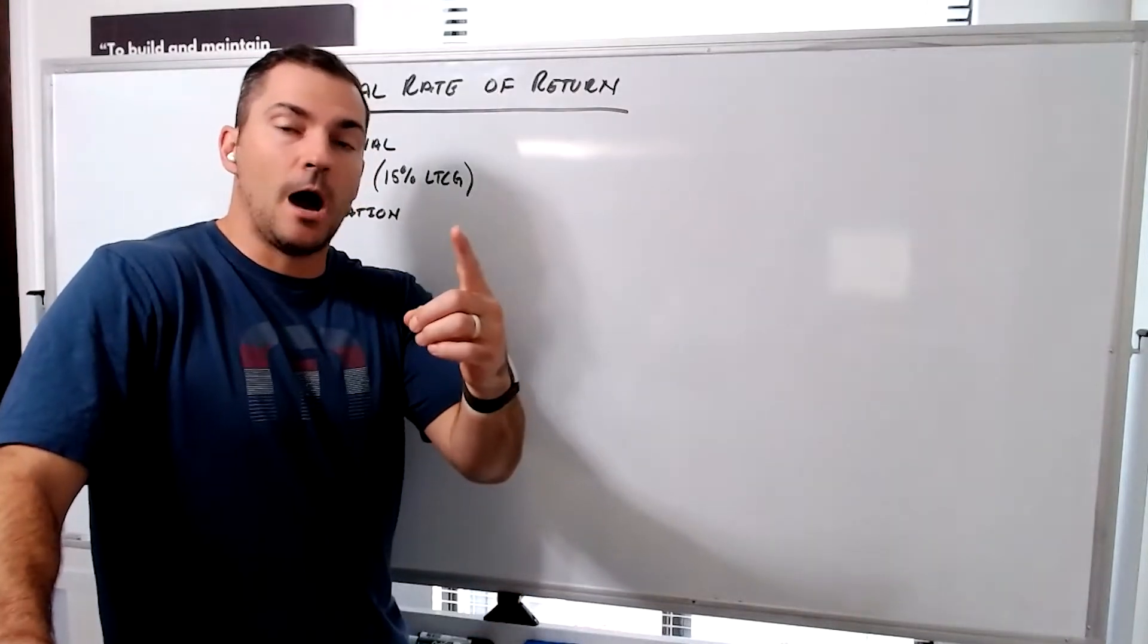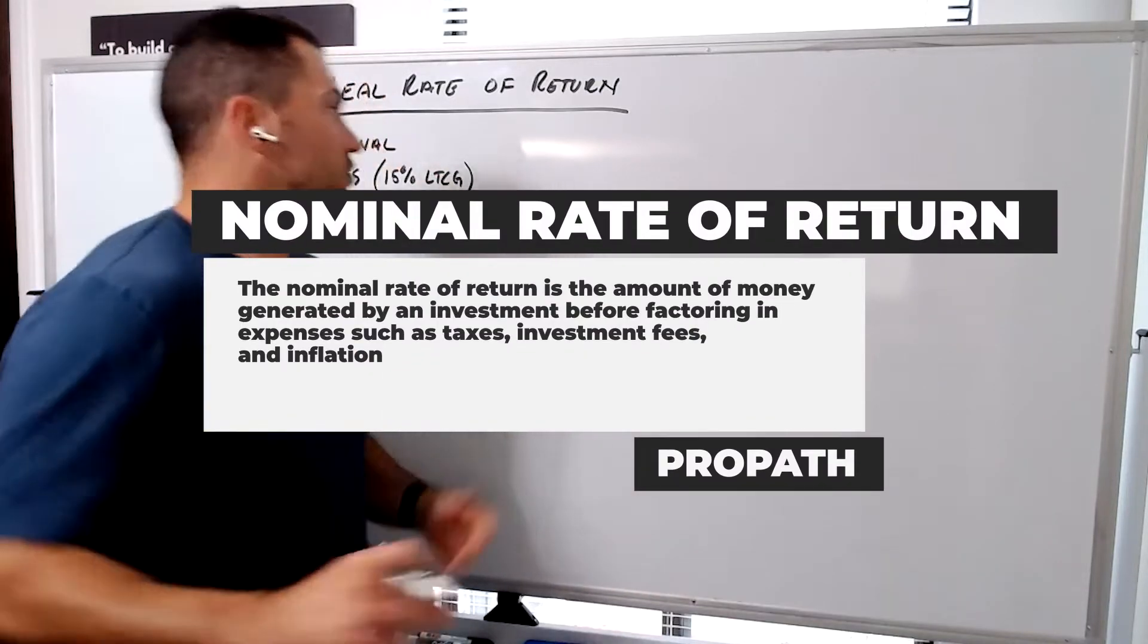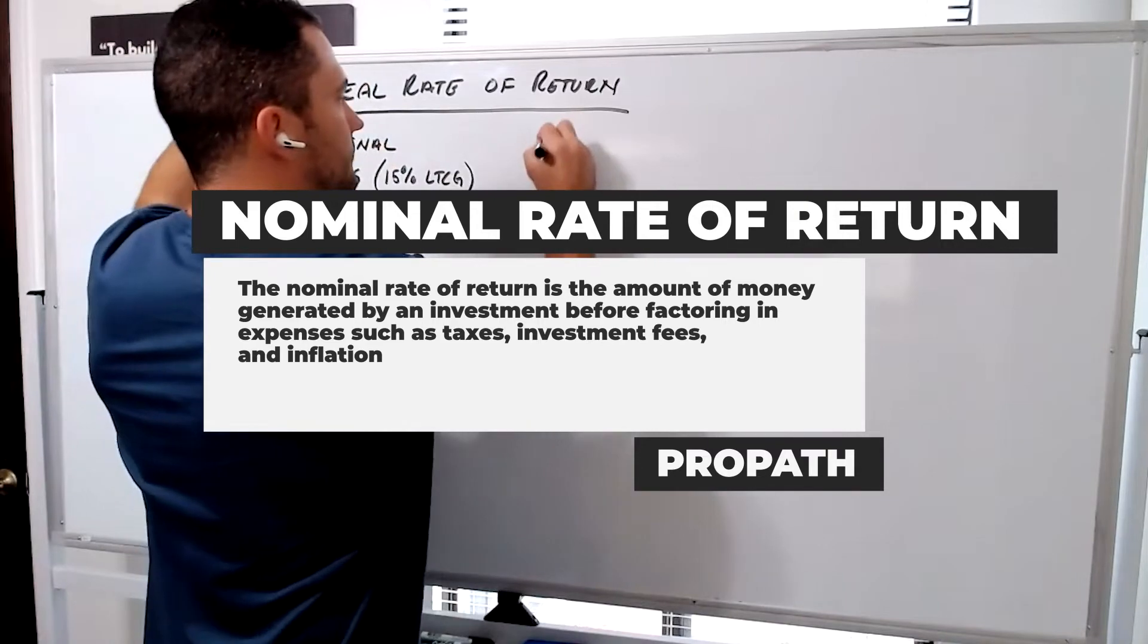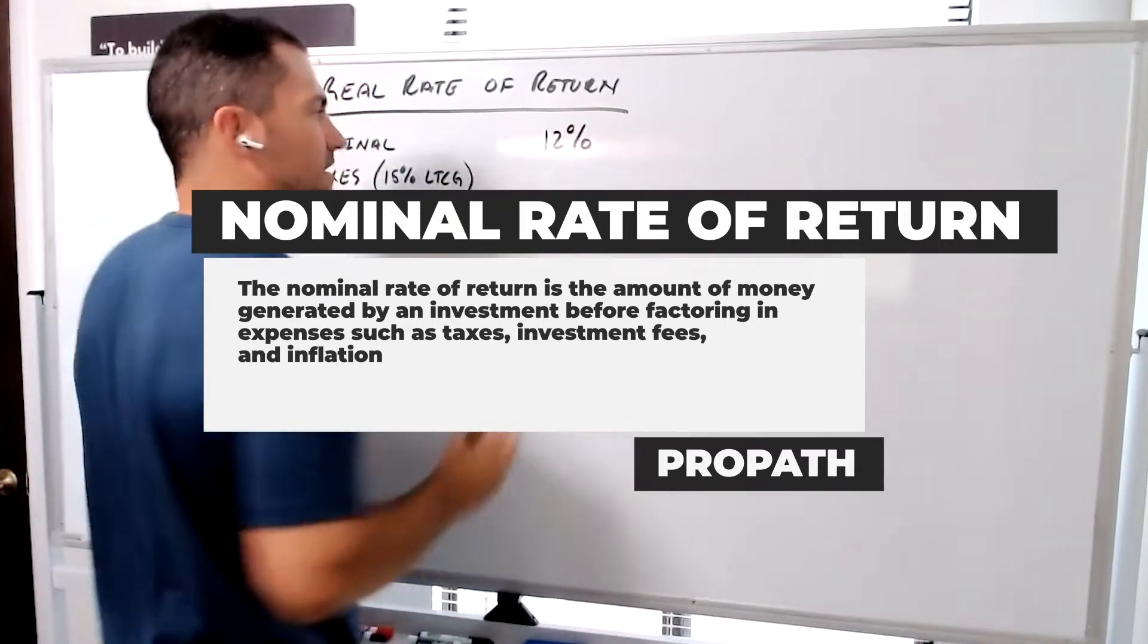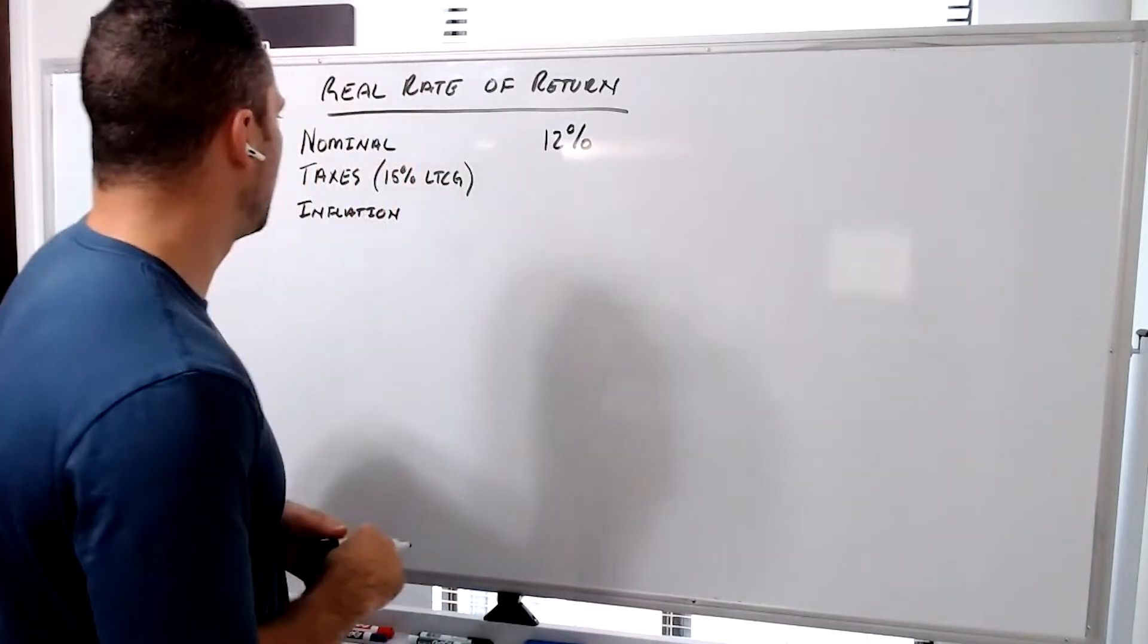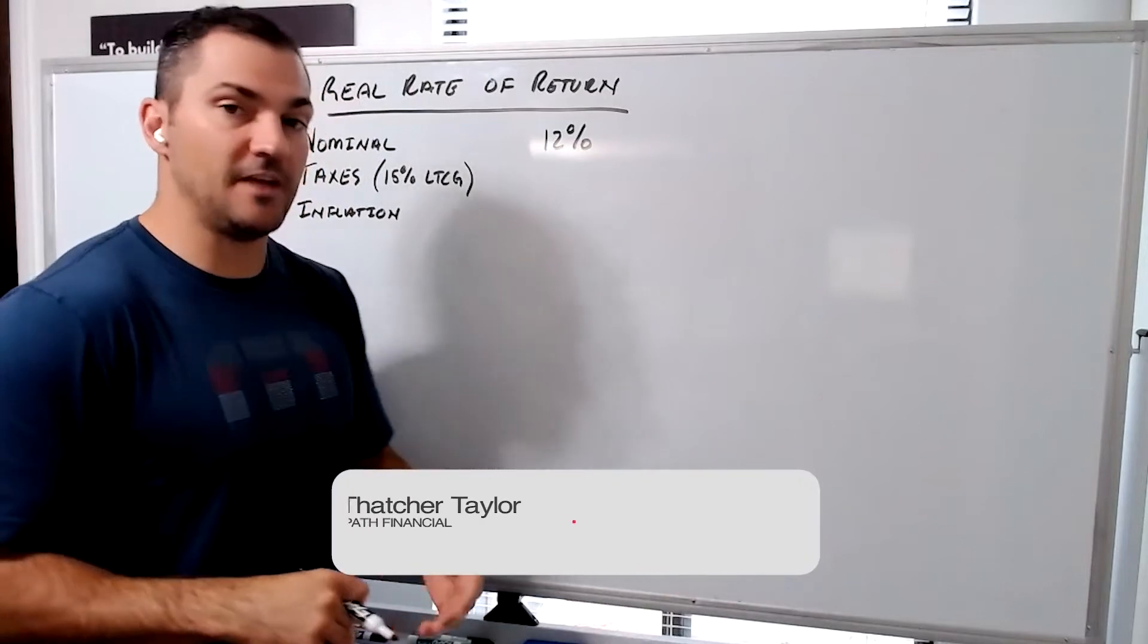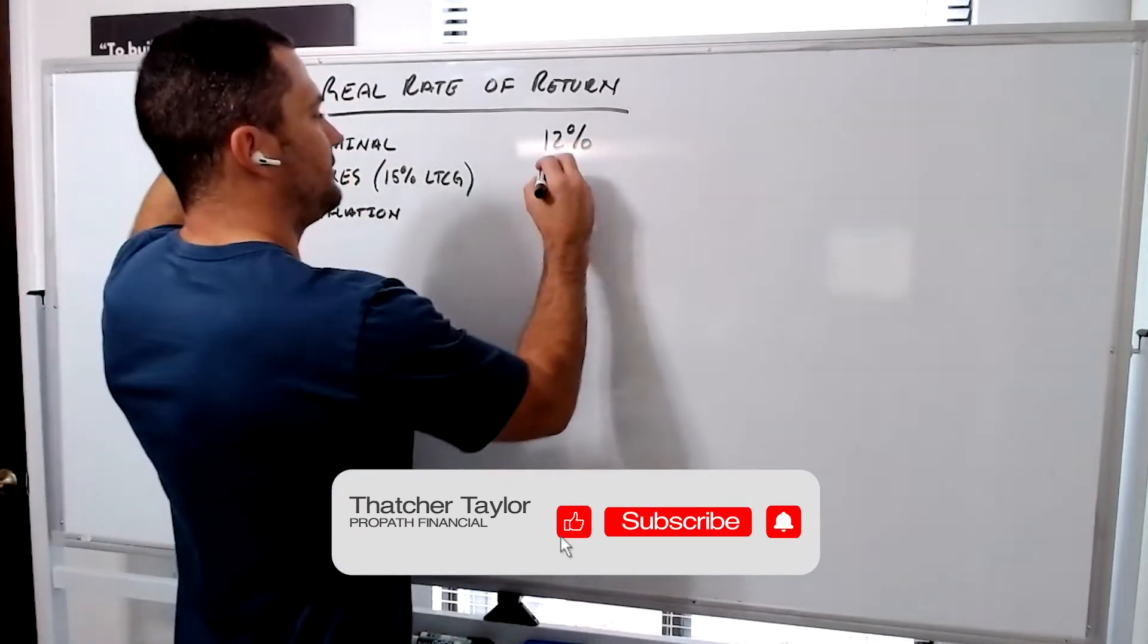There are three pieces of this. We need to know your nominal percentage, your tax percentage, and your inflation percentage. Let's say you get 12%. That's your nominal return. You invest $100,000, it turns into $112,000. Let's say you sell after a year. So after 365 days, it's a long-term gain. So that's 15%.